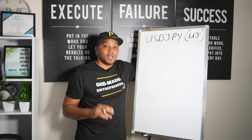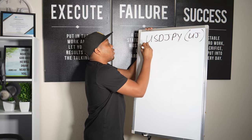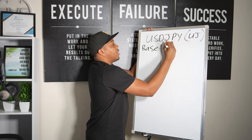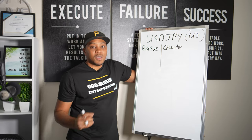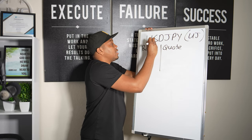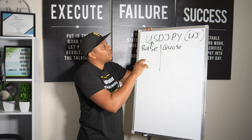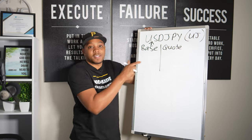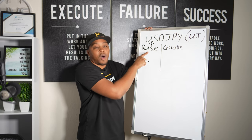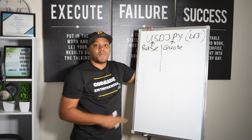When we're looking at currency pairs and a chart, you have to understand that we have two things: we have what's called a base and then we have what's called a quote. The base is always the first currency in a currency pair. The second currency in that currency pair is going to be your quote.